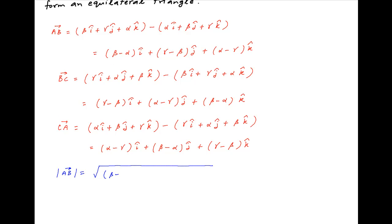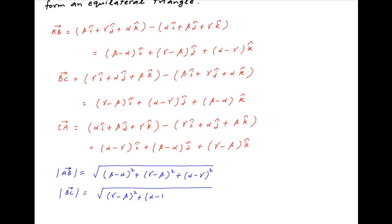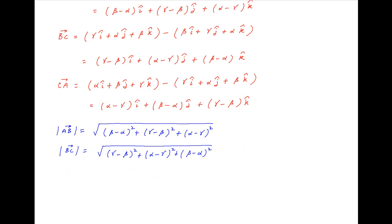Therefore, the absolute value of vector ab is equal to square root of (beta minus alpha) squared plus (gamma minus beta) squared plus (alpha minus gamma) squared. Similarly, the absolute value of vector bc is equal to the square root of (gamma minus beta) squared plus (alpha minus gamma) squared plus (beta minus alpha) squared. And finally, the absolute value of vector ca is equal to square root of (alpha minus gamma) squared plus (beta minus alpha) squared plus (gamma minus beta) squared.